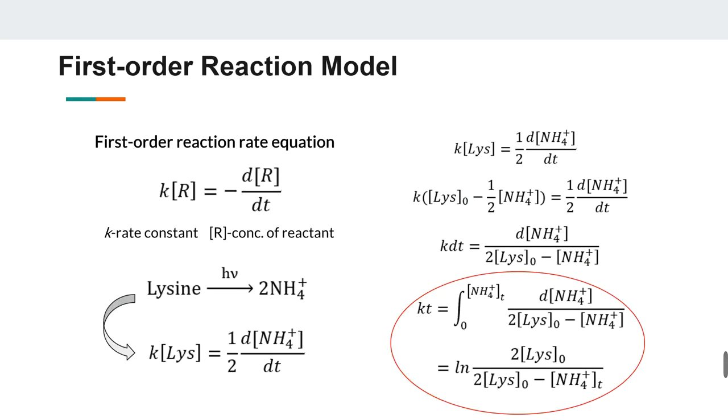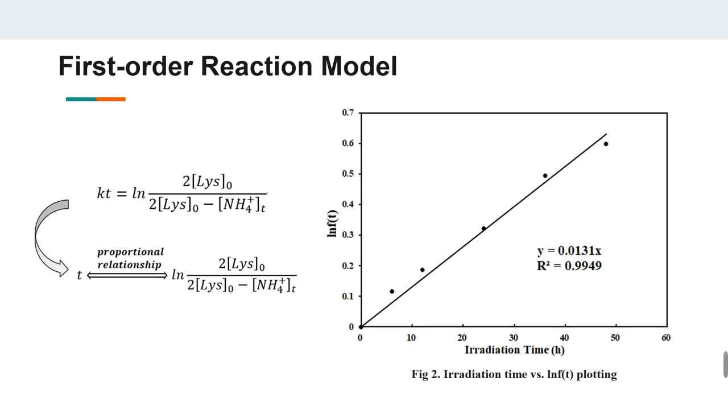Assuming that ammonium is the only nitrogen-bearing product in photolysis, we try to create a simple first-order reaction model for UV photolysis of lysine. Beginning from reaction rate equation, we acquire the function describing the relationship between irradiation time and the concentration. To verify our model, we substitute the ammonium concentration of each sample into the expression and plot the obtained values against the corresponding irradiation time. The strong proportional relationship indicates that our model could be right.